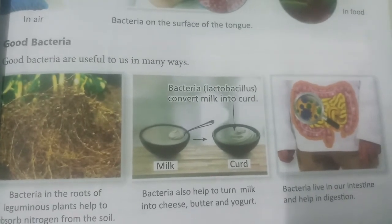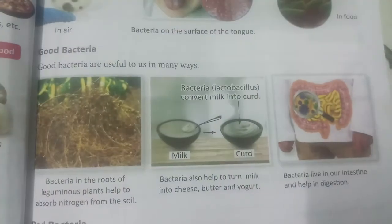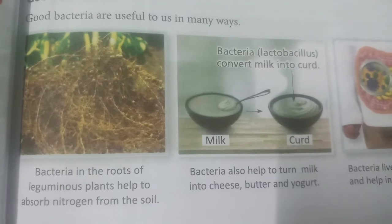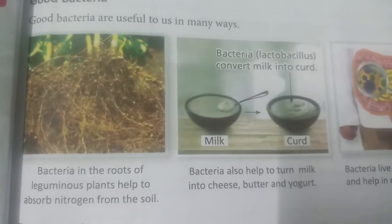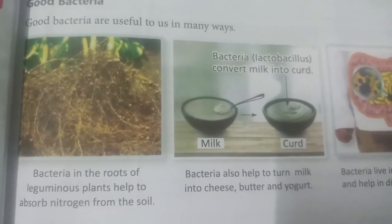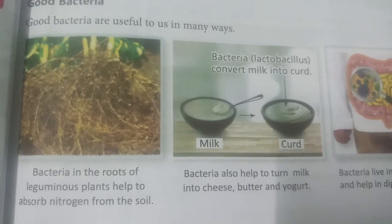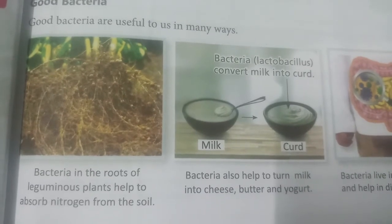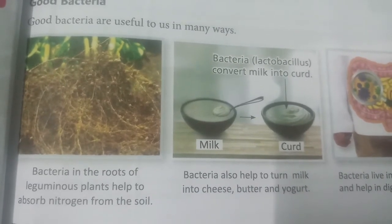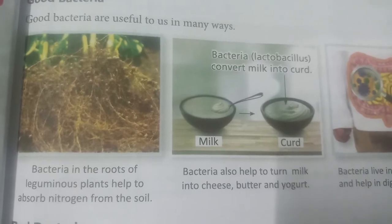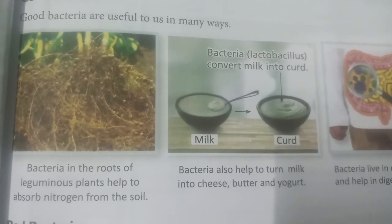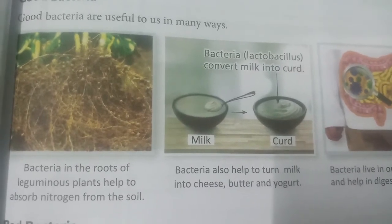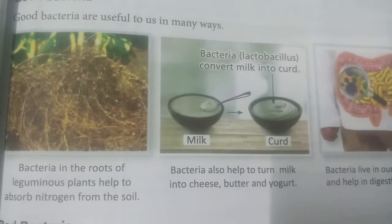Good bacteria are useful to us in many ways. Bacteria in the roots of leguminous plants help to absorb nitrogen from the soil. Leguminous plants are pulse plants — dal plants. The bacteria live in the roots of these leguminous plants and absorb nitrogen from the soil.